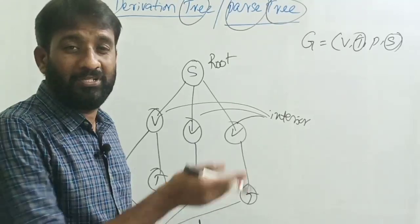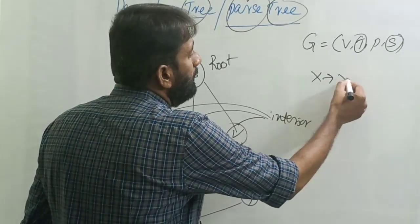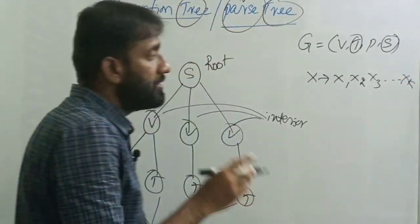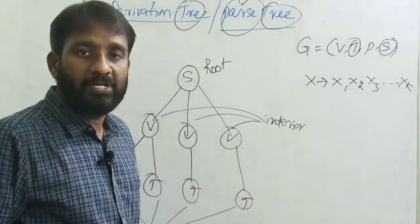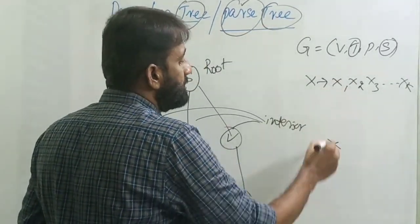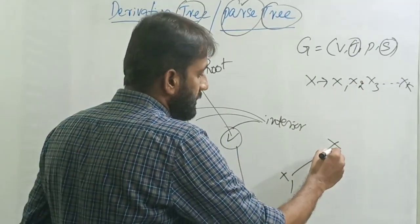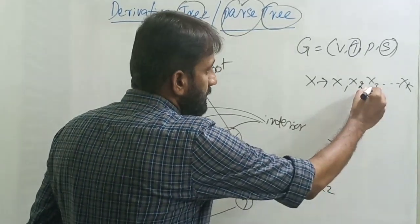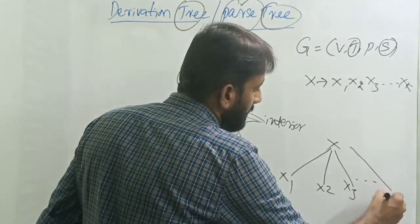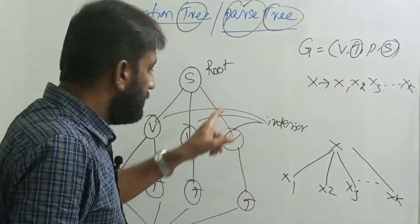How do you write one production in a derivation tree? For example, if you have a production X → X1 X2 X3 ... Xk, you take X as the node, add X1 as the left child, X2 as the next child, X3 as the next child, and so on, with XK as the last child. This is how you map grammar into the derivation tree.